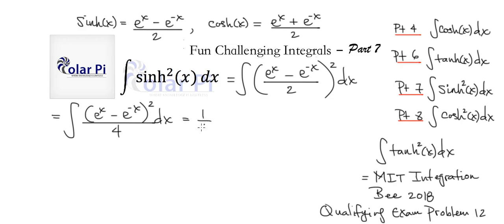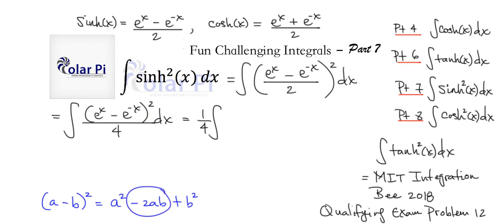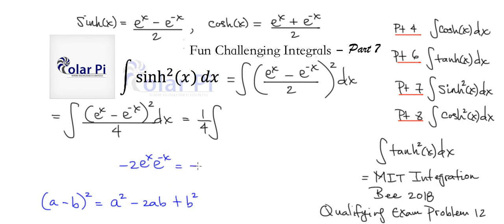Okay, so this is going to be — in turn — 1/4. We can take out the fourth in front of the integral. And then we've got the square of this. Well, that's a binomial squared. So it's like, if we had (a minus b) squared, that would be a squared minus 2ab plus b squared, where a is e to the x and b is e to the negative x.